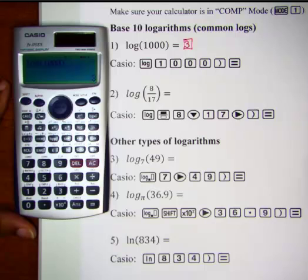Keep in mind the log of 1000 is asking the question 10 raised to what power gives you 1000. Therefore the answer is 3 because 10 to the third power is 1000.